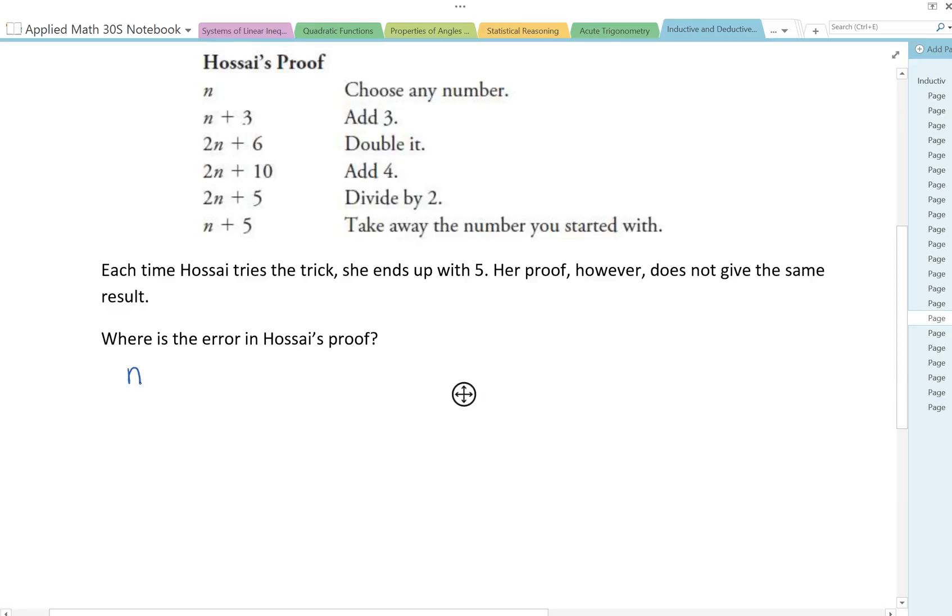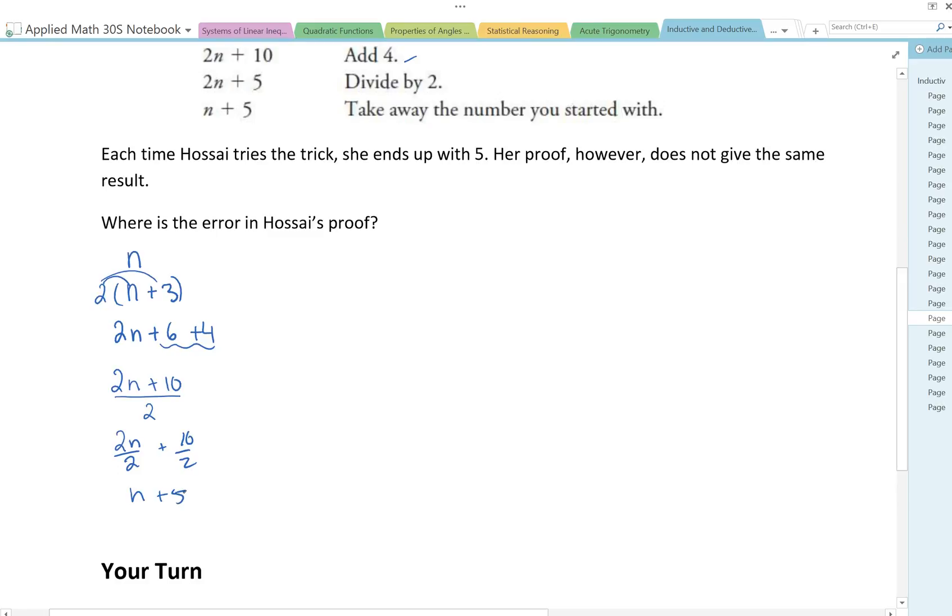Choose any number n, that's fine. Add 3, so that's n plus 3. Double it. I'd have to multiply everything by 2, so that would give me 2n plus 6. The 2 has to be given to both the n and the 3. I've chosen a number, I've added 3, I've doubled it. Now I have to add 4. Like terms tell me I'm just adding it there, so that'd be 2n plus 10, that's add 4. Then divide by 2. So divide by 2 means 2n divided by 2 plus 10 divided by 2, which would give me n plus 5. Well, she's got 2n plus 5. Then n plus 5, take away the number you started with. We started with n. If I subtract n, those n's cancel out and I end up with 5, which is exactly what we wanted.